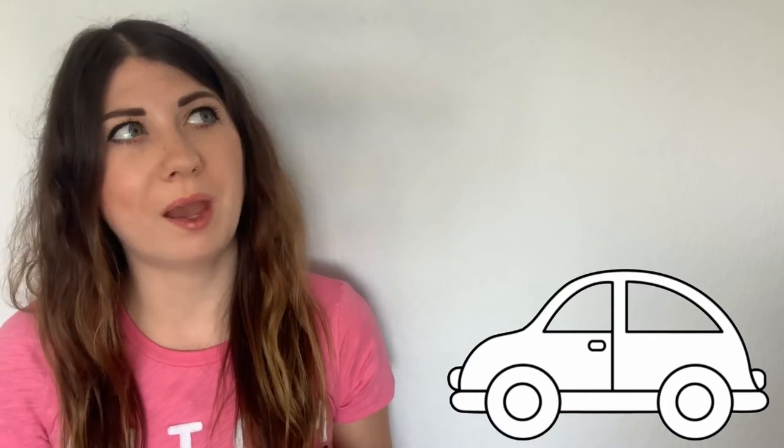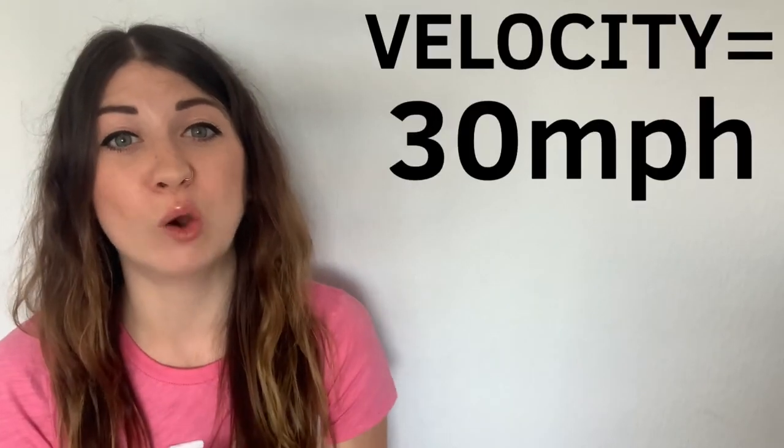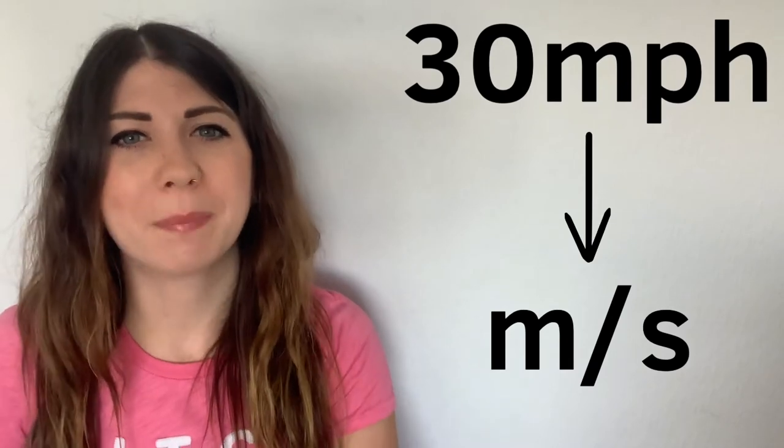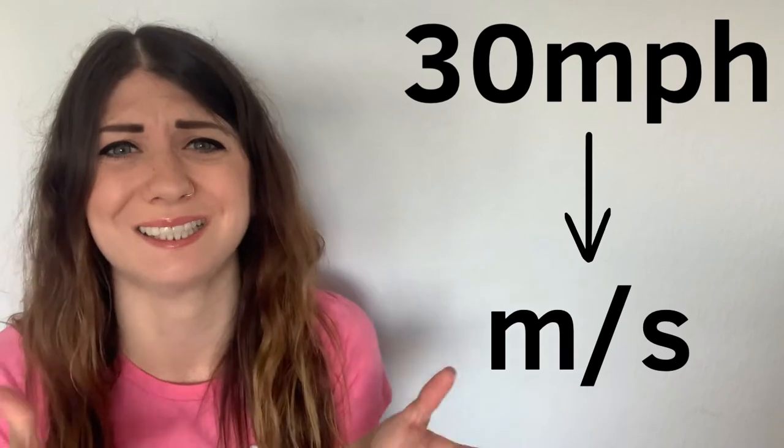Let's compare this to a car crash. Let's take an average sized car which has a mass of about 1,300 kilograms and it's traveling in a straight line at 30 miles an hour. Firstly let's convert this to meters per second because we have to use the SI units for the equation to make sense.